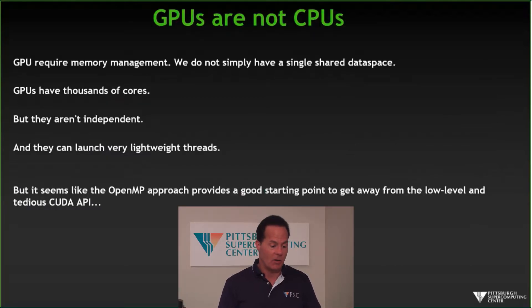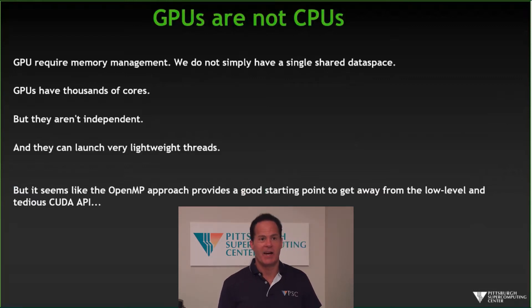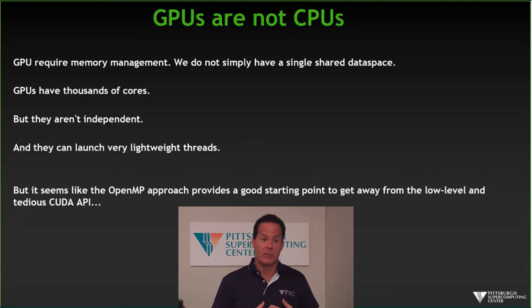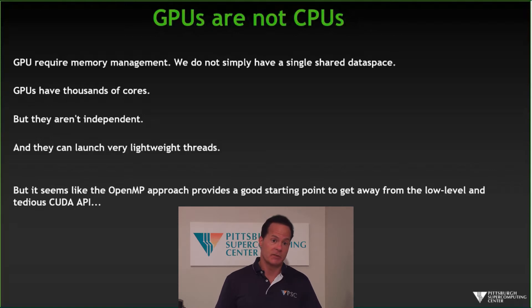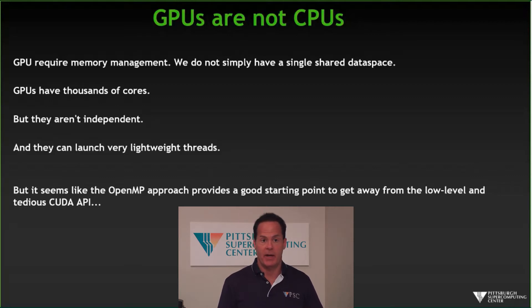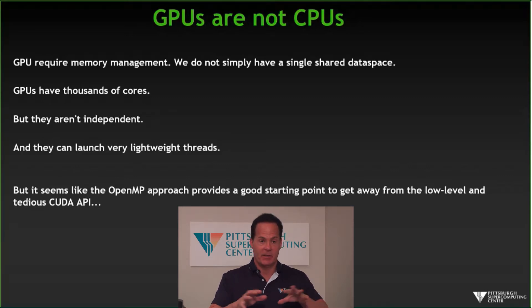GPUs are not CPUs at all. The memory management is the most obvious difference, but immediately apparent from any architectural schematic is that there are thousands of cores — far more than the 28-core Xeon processors we've been using today. Those thousands of cores aren't independent x86-type architecture cores; they're very simple-minded cores that have to be slaved together at different levels. There's a hierarchy to them.